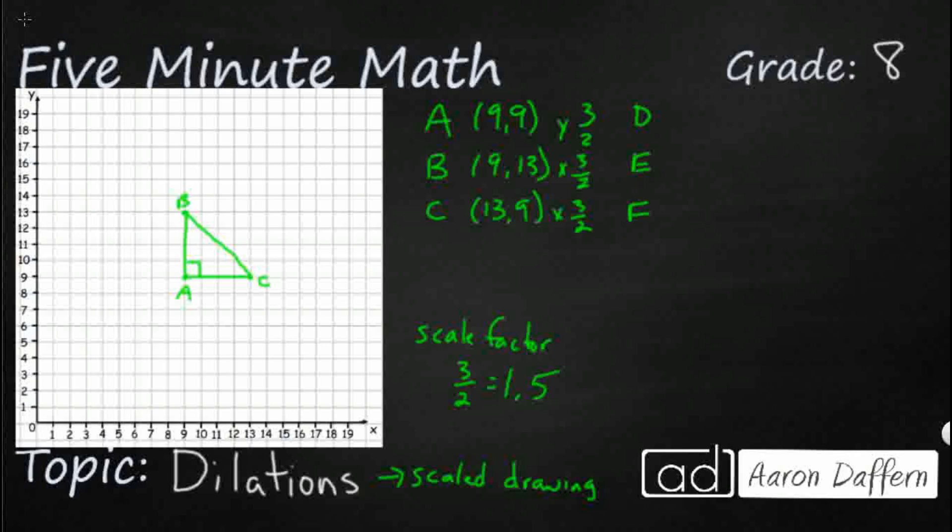So let's multiply 13 by 3 halves. Alright, so we're going to get our 39 over 2, but that's going to be 19.5. So I'll probably just use a 19.5.